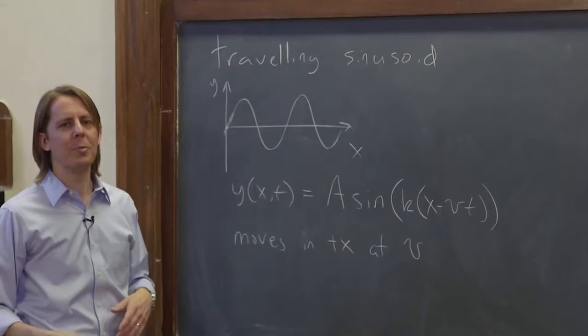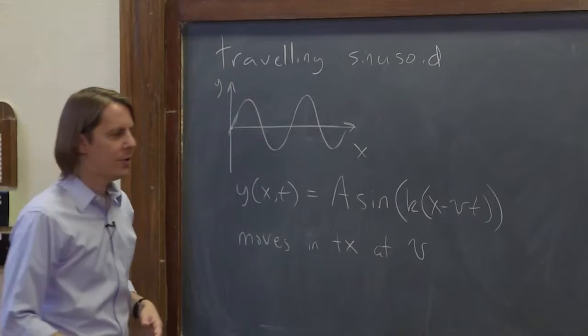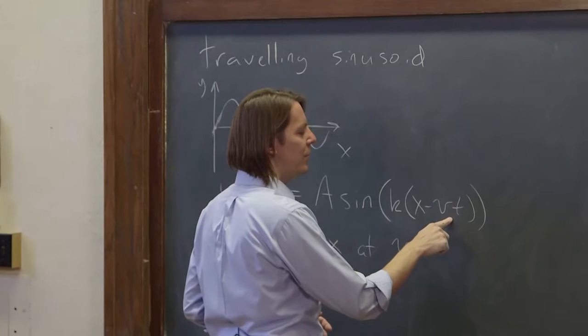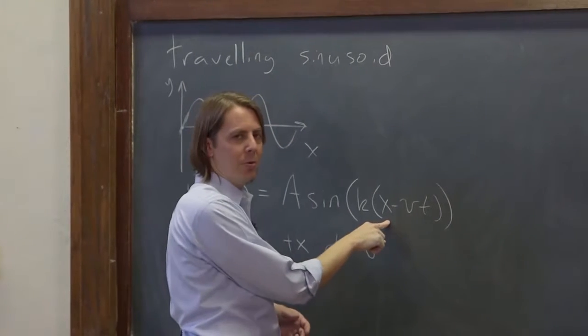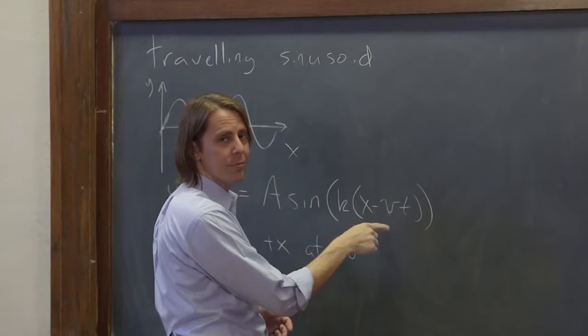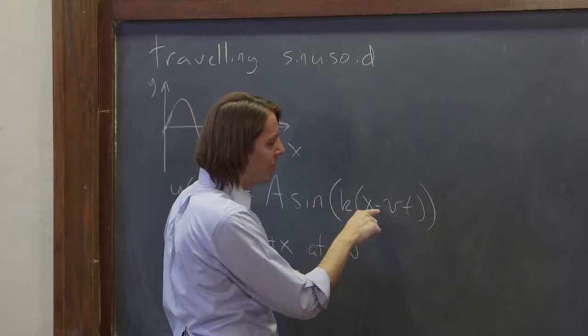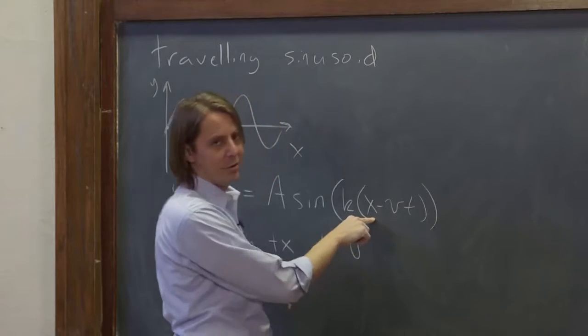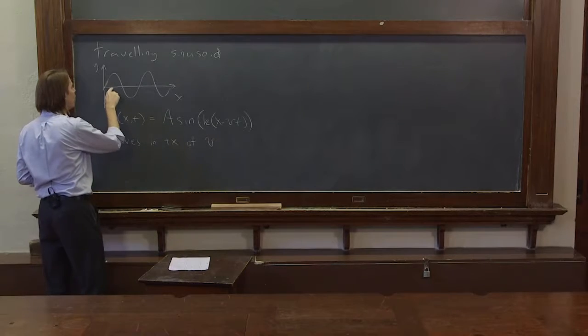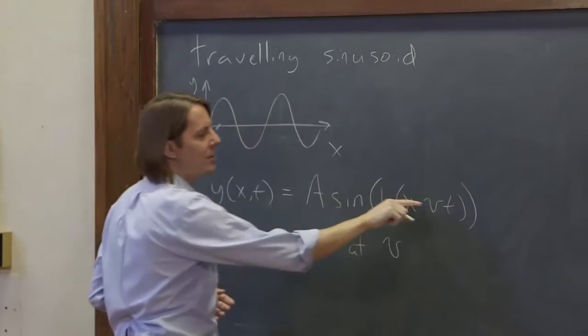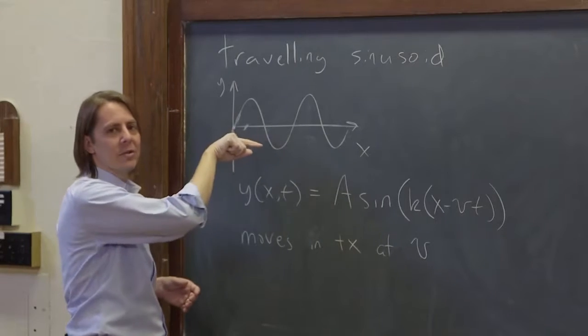Now, what if we let time creep forward a little bit? If time creeps forward, this part becomes a little bit negative. But if we want to keep up where that zero is, this part will have to become a little bit positive to cancel it out. We're keeping up with the sine zero. So because that negative is there, this has to grow positive. So that means that zero will occur a little bit over here at a positive x. So the minus vt makes the curve go in positive x.